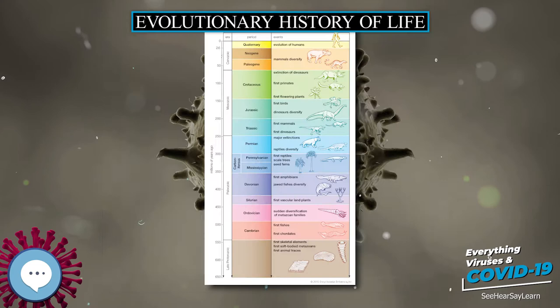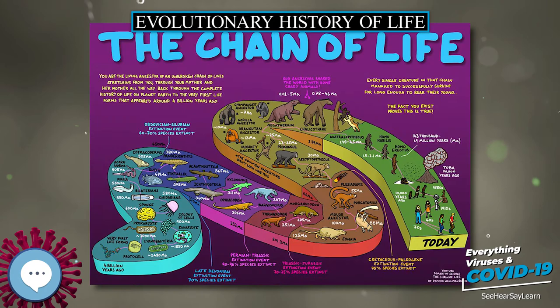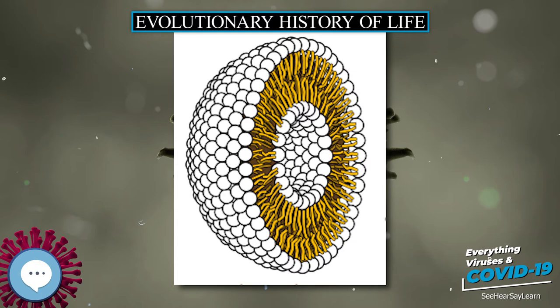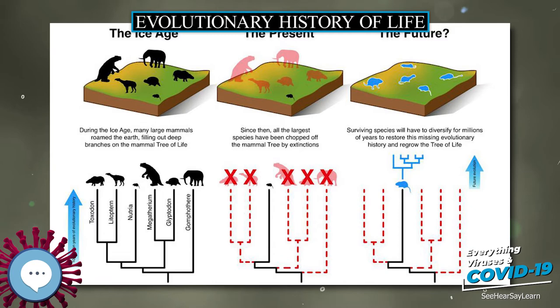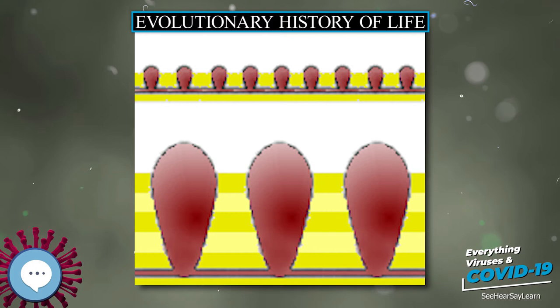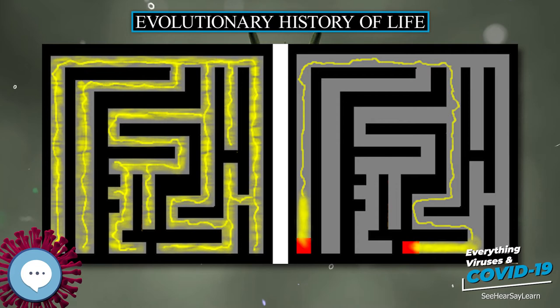A series of experiments starting in 1997 showed that early stages in the formation of proteins from inorganic materials including carbon monoxide and hydrogen sulfide could be achieved by using iron sulfide and nickel sulfide as catalysts. Most of the steps required temperatures of about 100 degrees Celsius and moderate pressures, although one stage required 250 degrees Celsius and a pressure equivalent to that found under 7 kilometers of rock. Hence it was suggested that self-sustaining synthesis of proteins could have occurred near hydrothermal vents.